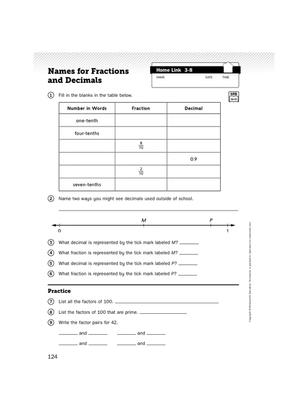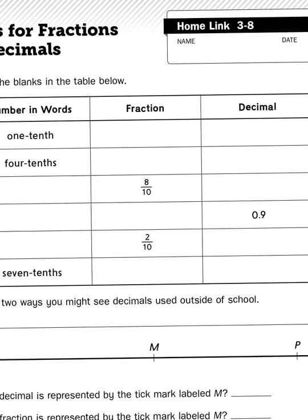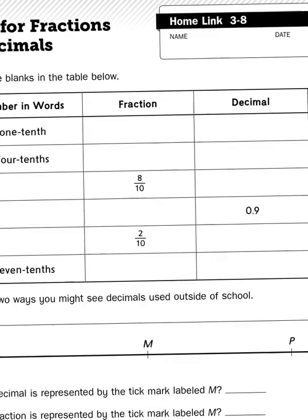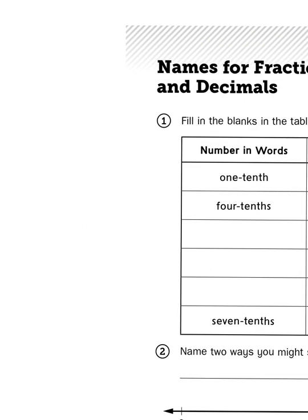If you take a look at the first set of problems for number 1, it says fill in the blanks in the table below. So, in word form, we have the fraction 1 tenth. How would we represent that as a fraction and as a decimal? Well, it would be helpful if we looked at a model first. 1 tenth basically tells us that we have a shape or an object that has been cut into 10 parts, and one of the tenths is being represented there.